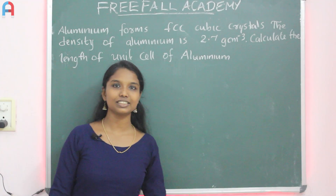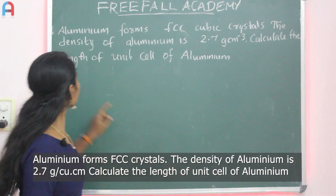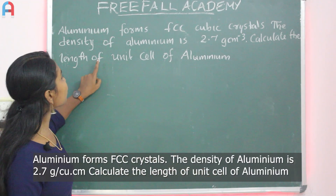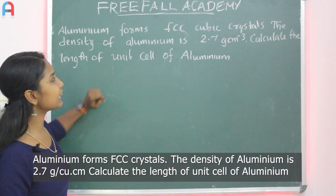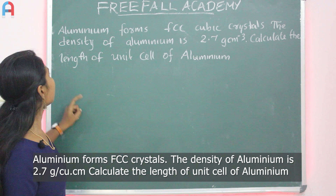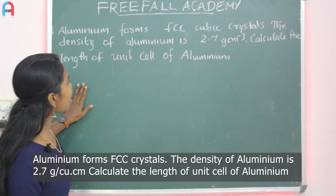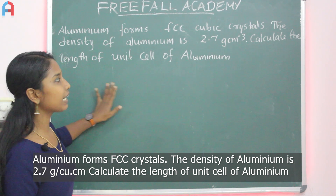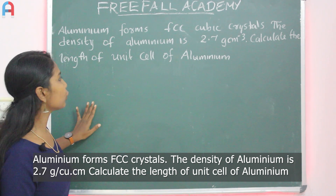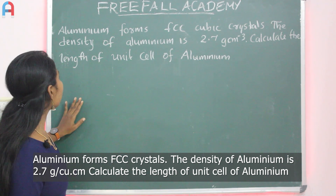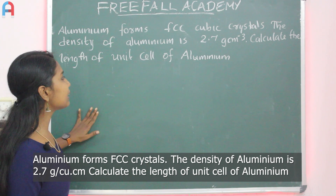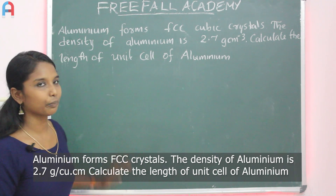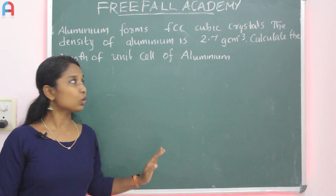First question: Aluminium forms an FCC cubic crystal. The density of aluminum is 2.7 grams per centimeter cube. Calculate the edge length of the unit cell of aluminum.